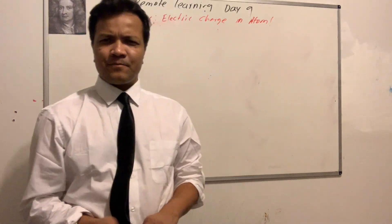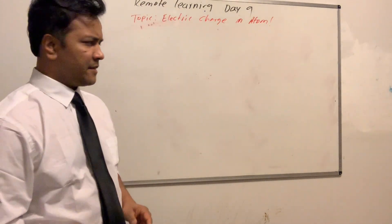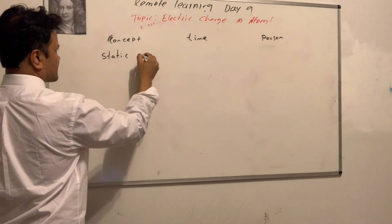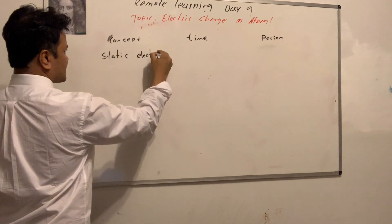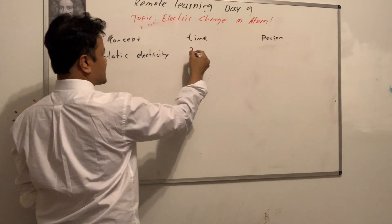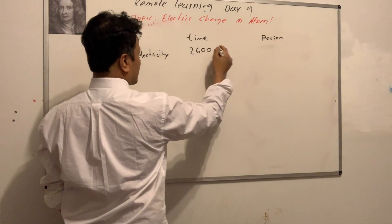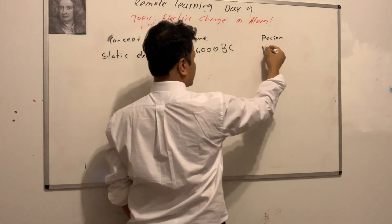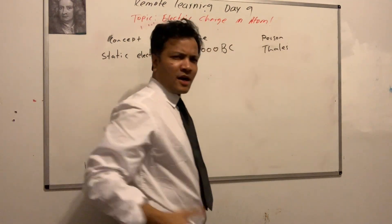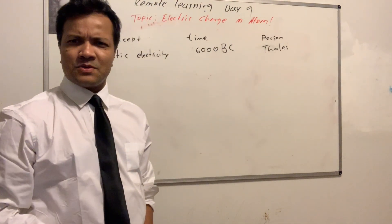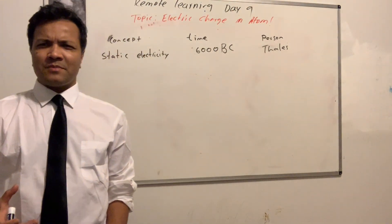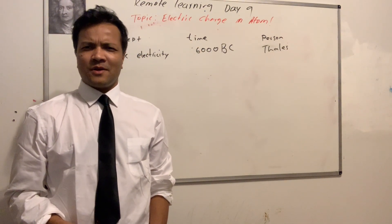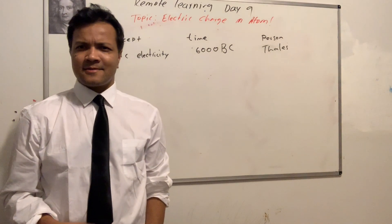Let's look at the timeline, starting 2,600 years ago, about 600 BC. The person is Thales. Thales took an amber and used to rub it with a piece of cloth. He charged the amber and used it to demonstrate static electricity.